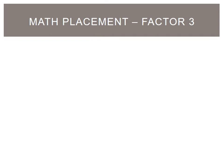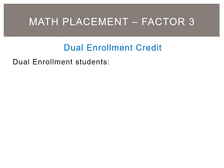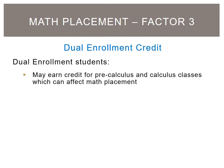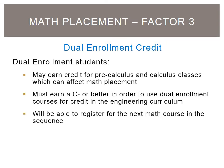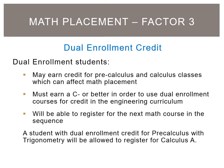If you are or were enrolled in college courses through a dual enrollment program, you may earn credit for pre-calculus and calculus classes and be placed into a higher level math course for your first semester. Students must earn a C- or better in those courses in order to receive credit. For example, if a student takes pre-calculus with trigonometry via dual enrollment, then the student will be placed into Calculus A.